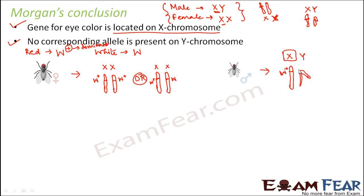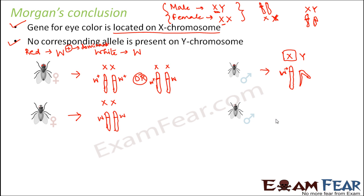For a white-eyed female, both X chromosomes must carry the recessive allele w (X^w X^w), because even one w+ allele would make her red-eyed. For a white-eyed male, the X chromosome carries w and the Y chromosome carries nothing relevant to eye color (X^w Y).